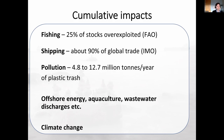Cumulative impacts are the combined impacts of all the different ways in which people affect marine ecosystems. We affect marine ecosystems through many activities: many fish stocks are over-exploited; shipping — which carries about 90% of global trade — causes pollution, collisions with marine mammals, and underwater noise; land-based activities put several million metric tons of plastic into the oceans every year; and there are local activities like offshore energy, aquaculture, and wastewater discharges. All of this is happening against the background of climate change.